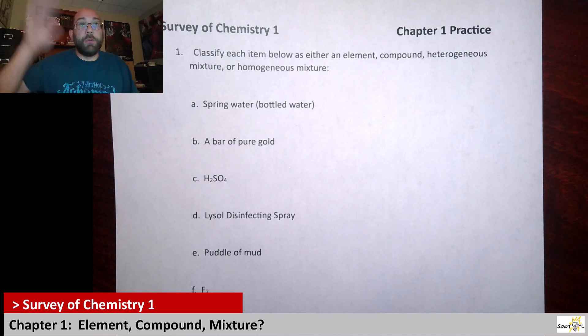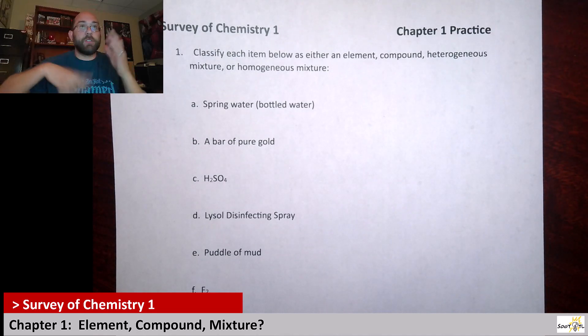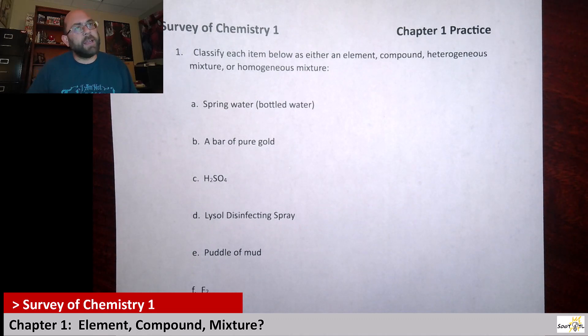So if it's homogeneous, it looks uniform throughout, right? It kind of looks the same consistency. That's homogeneous, uniform throughout. Heterogeneous is where you're going to actually see different regions of it look very different.